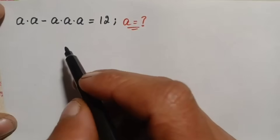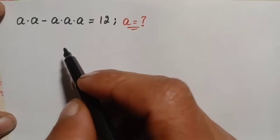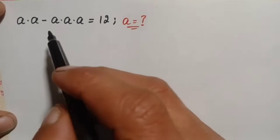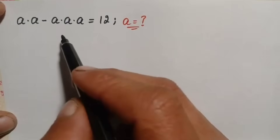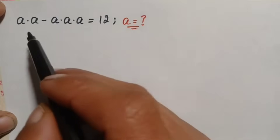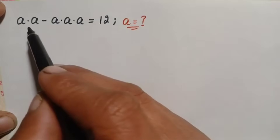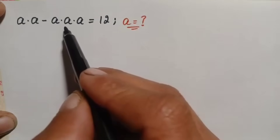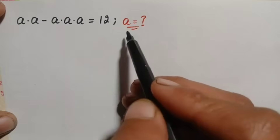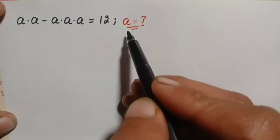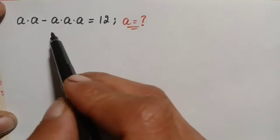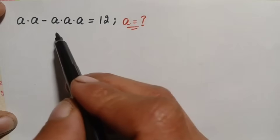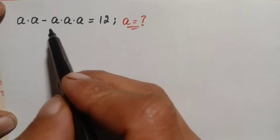Hello everyone, welcome to Math Explorer. We will solve a nice and interesting algebra math problem: a times a minus a times a times a is equal to 12. We will try to find the value of a in this interesting algebra problem.